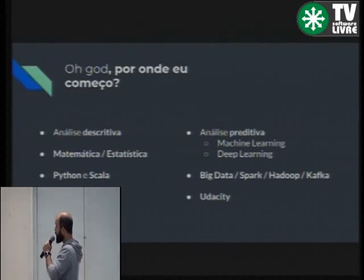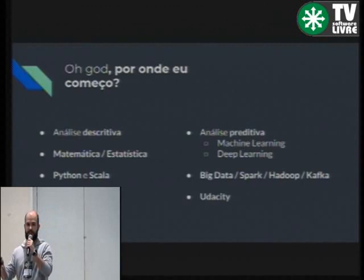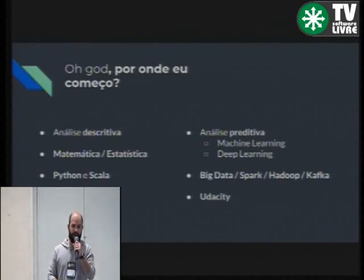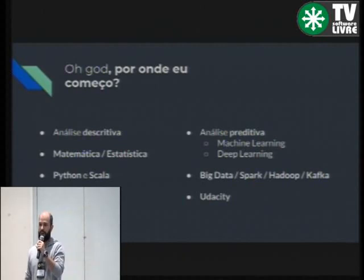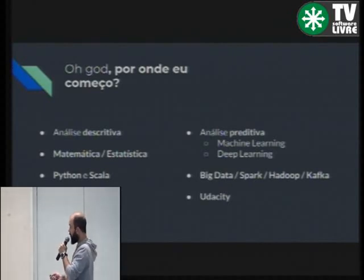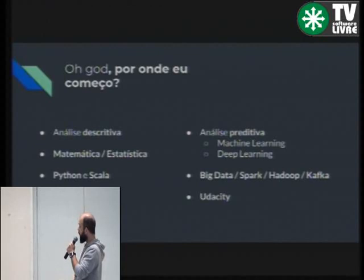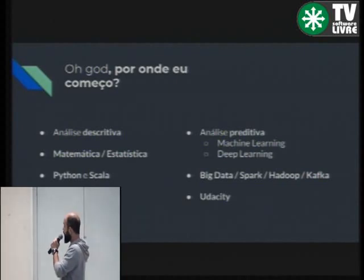As linguagens mais utilizadas, tanto na academia como no mercado, são Python e Scala. Python pela curta curva de aprendizagem — começaram a entrar profissionais que não eram da computação nessa história de análise preditiva, e como Python é uma linguagem muito fácil de se aprender, acabou sendo adotado pela academia e pela indústria. Scala é utilizada dentro do ecossistema Hadoop, que é o ecossistema Big Data. Dentro da análise preditiva, a gente tem esses dois níveis de complexidade: Machine Learning e Deep Learning.